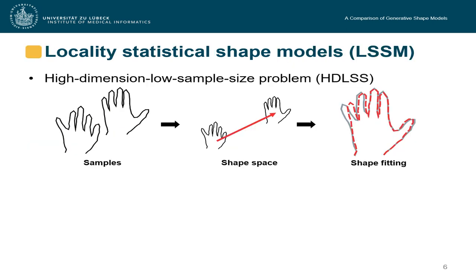There is a major drawback with the standard shape models which is called the high dimension low sample size problem, which means that we typically have a much larger dimension of the data we want to describe than the dataset sizes. So let's imagine we only have two training samples, in this case shapes of the hand, in one hand the pinky finger spread and in the other thumb is spread.